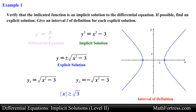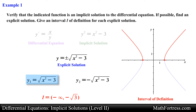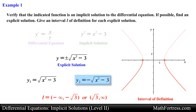However, because this implicit function is not differentiable at the vertices, we need to exclude these values from the domain so that we can define an appropriate interval of definition. If we were to use the positive explicit solution, our interval of definition would be from negative infinity to negative square root of 3 exclusive, or from positive square root of 3 exclusive to positive infinity. If we were to use the negative explicit solution, we would have the same interval of definition but using the bottom half of the hyperbola. In this example we were able to find an explicit solution and use it to define an appropriate interval of definition.